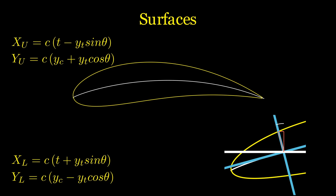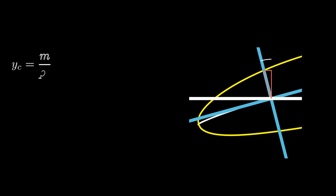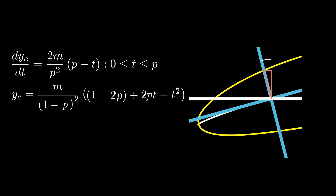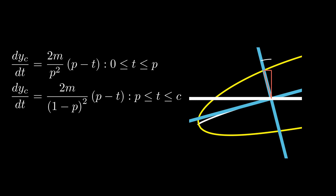If you're wondering what theta is equal to — the angle is formed by the slope of the mean camber line and the chord line. So if you take the derivative of the mean camber line equations and put them into the arctan, you get theta.